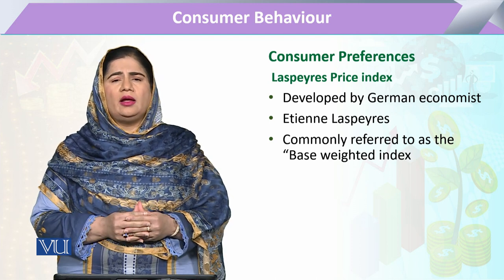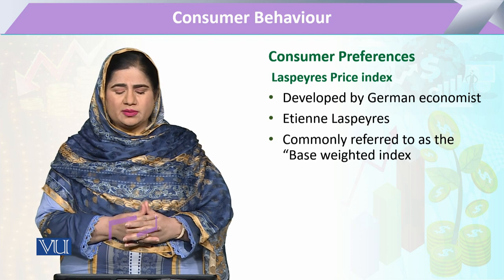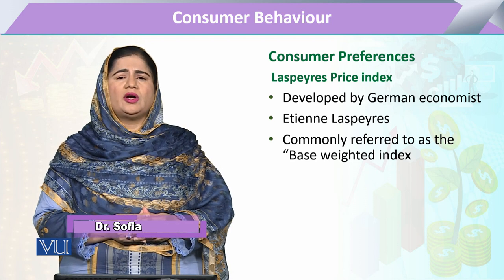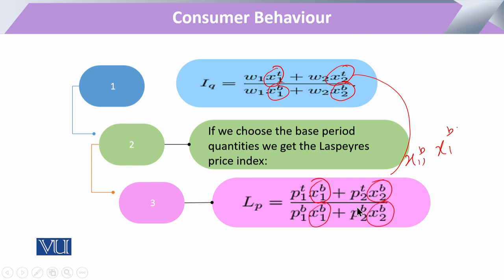The Laspeyres index was developed by a German economist and its name was given after that German economist. In this index we mostly utilize the quantity of the commodity from the base period. When it is derived from the quantity index previously developed, those quantities are now substituted with each commodity's quantity at the base period. So in the Laspeyres index, all commodities' quantities are expressed with the notation B, meaning base period.